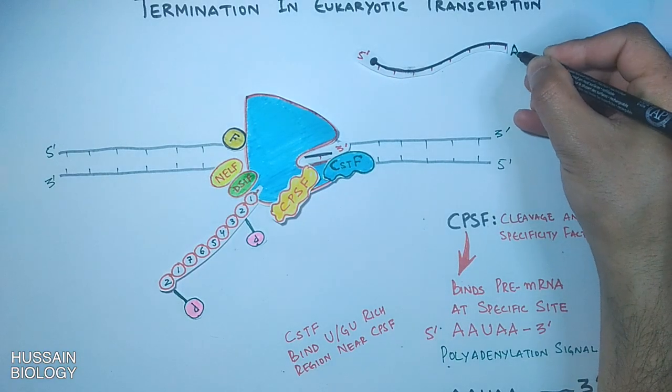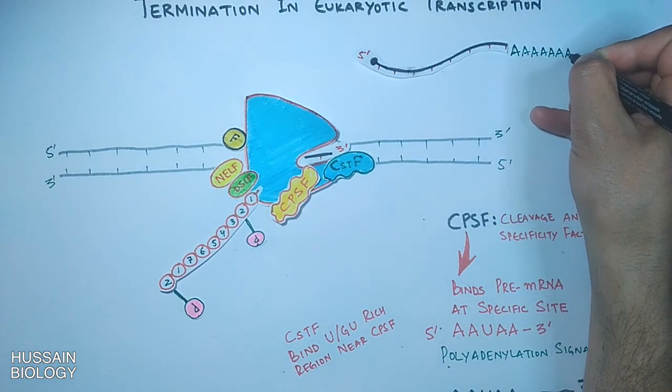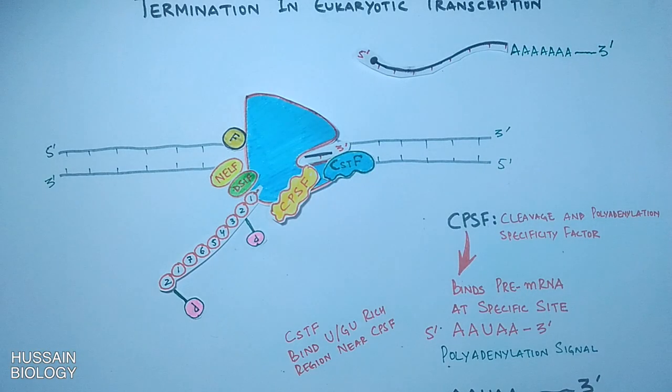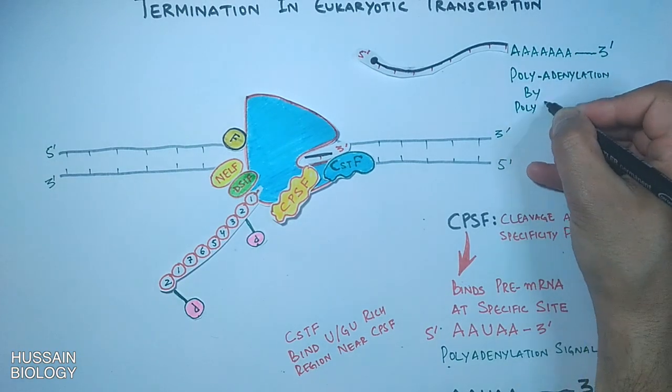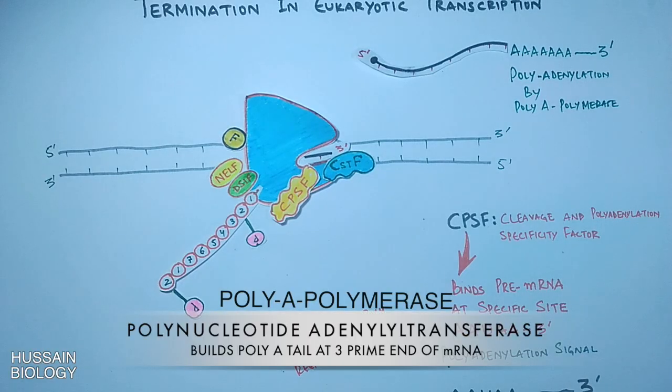And to this pre-mRNA cleavage molecule the polyadenylation is done where we see many adenines are added to the tail of mRNA, thus giving us poly-A tail on three prime end. And this is done by poly-A polymerase enzyme.